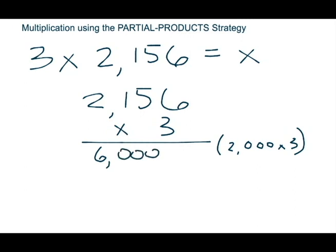Then I'm going to go to the next largest digit, and that's the 1 because it's in the hundreds place. If you have only 1 hundred, that equals 100. I'm going to write that in parentheses — 100 — and again I'm multiplying by the 3, the factor on the bottom. 100 times 3 is 300, and I'm going to line that up with the 6,000. The 3 in the hundreds place goes just below the 0 in the hundreds place in 6,000, the 0 in the tens place of 300 goes directly underneath the 0 in the tens place of 6,000, and the 0 in the ones place of 300 goes directly underneath the 0 in the ones place of 6,000.